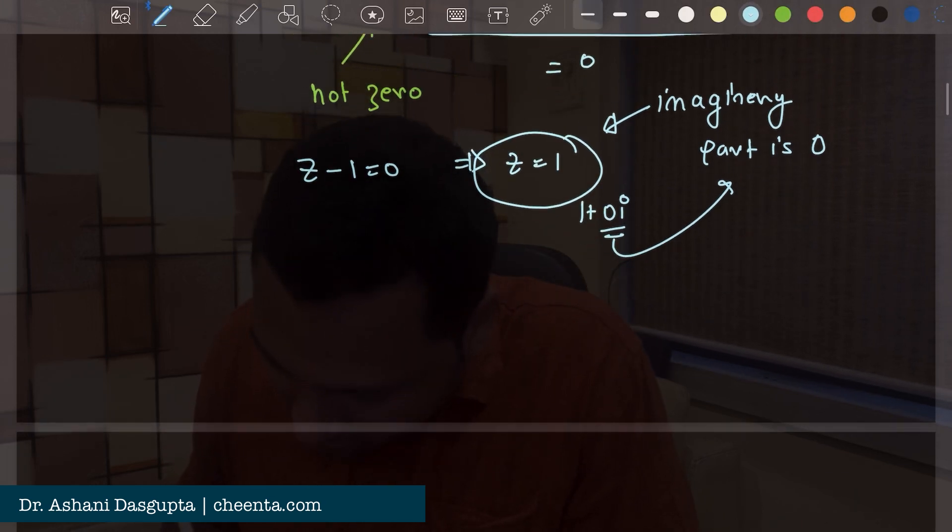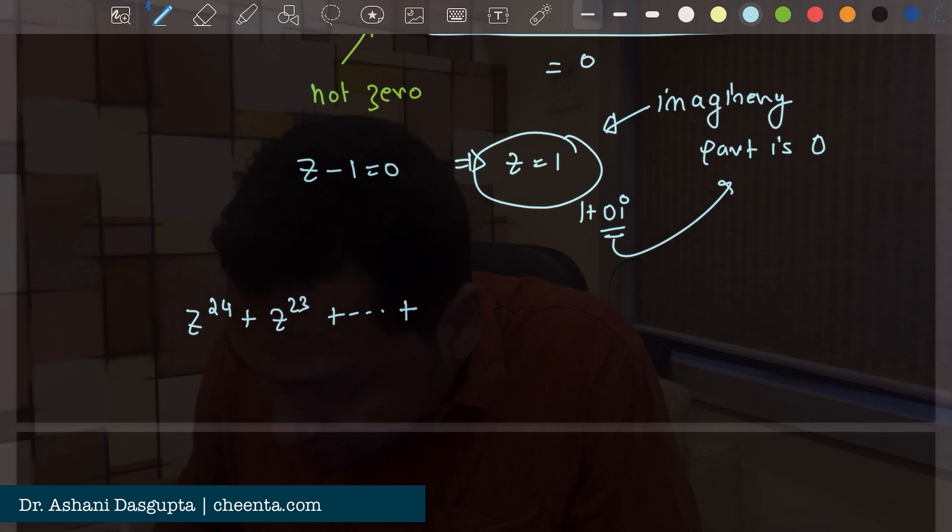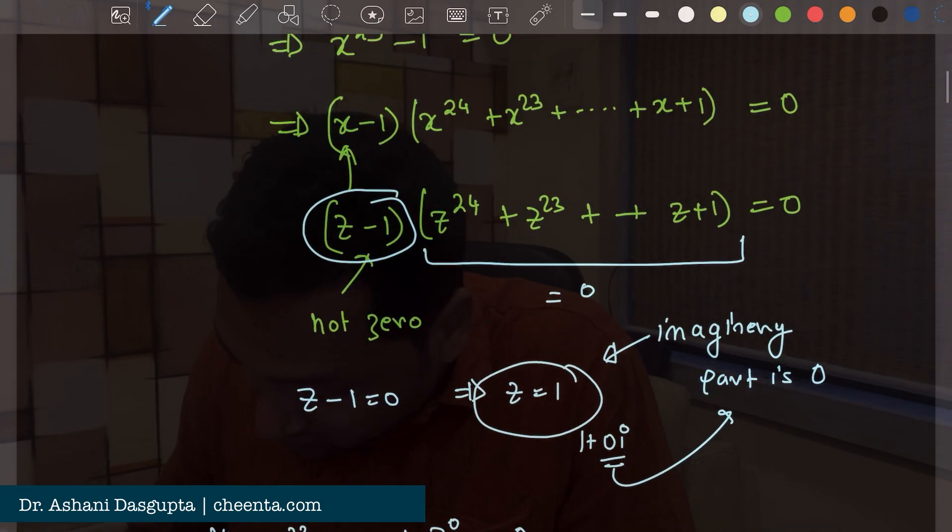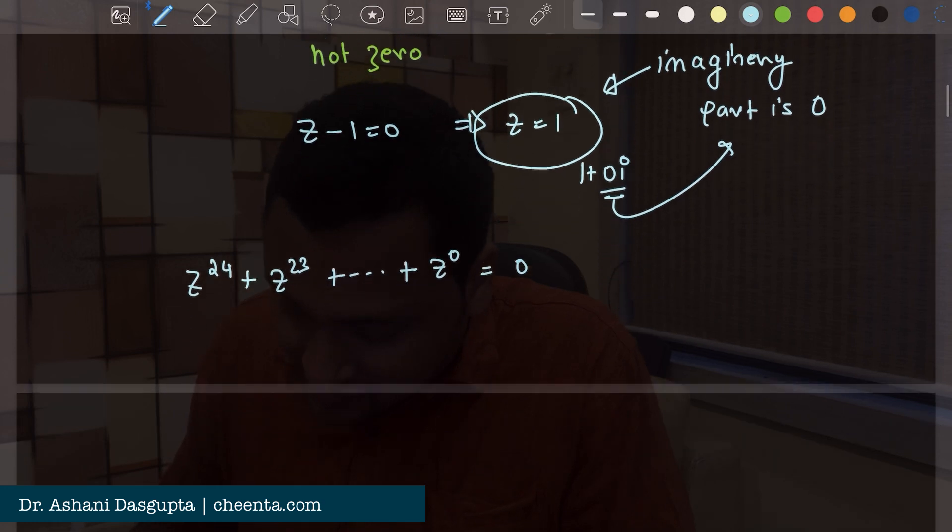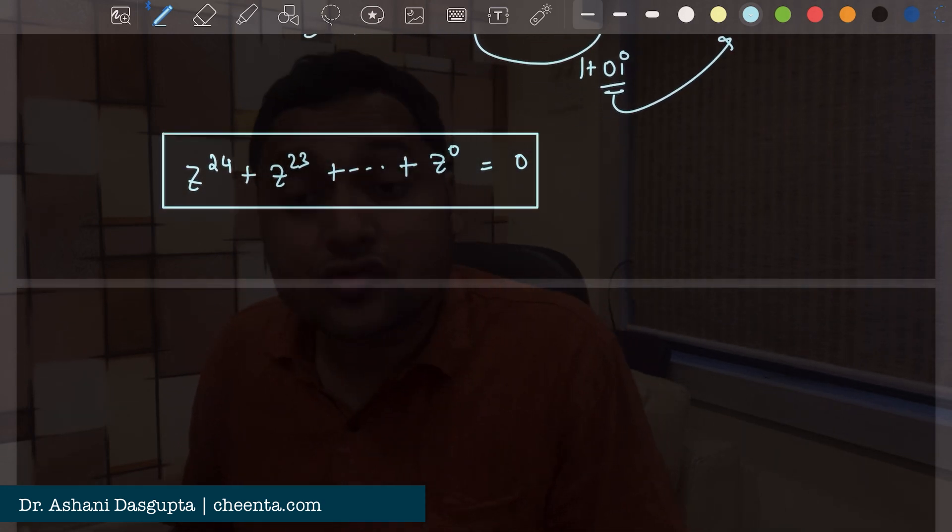So what we got is z to the power 24 plus z to the power 23 plus up to z to the power 0 is equal to 0. This last one I can write it as z to the power 0. So this is 0. That's what we got. So that's a strong first step.